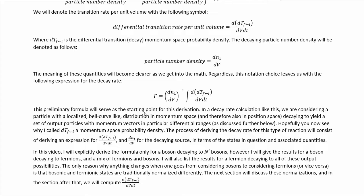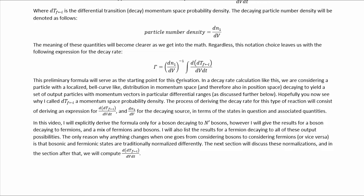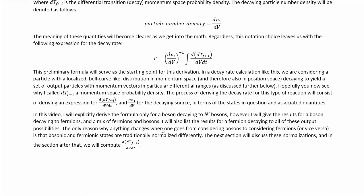This preliminary formula will serve as the starting point for this derivation. In a decay rate calculation like this, we are considering a particle with a localized bell curve-like distribution in momentum space, and therefore also in position space, decaying to yield a set of output particles with momentum vectors in particular differential ranges. The process of deriving the decay rate will consist of deriving expressions for the differential transition probability density and the particle number density in terms of the states in question, then inserting them back to get a useful expression.